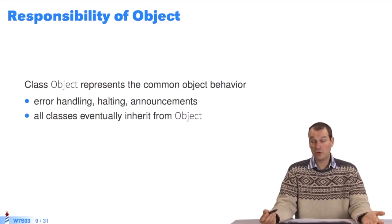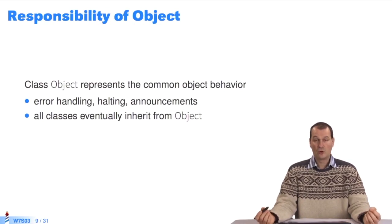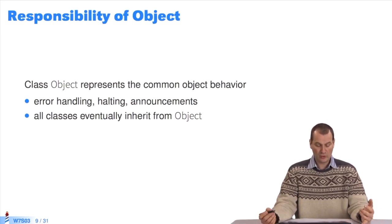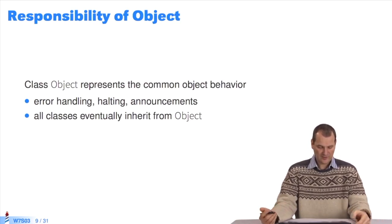What is the responsibility of object? It represents object behavior, common to all objects, such as error handling, inserting a halt, and announcements. Object is the root of the inheritance tree. Its key responsibility is minimum behavior.